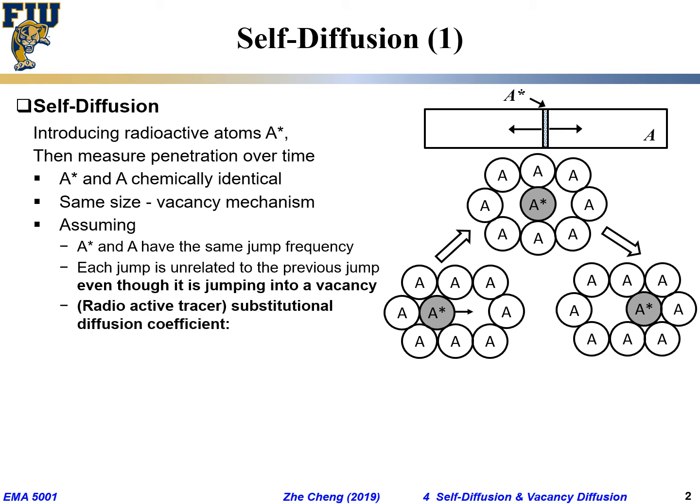Even though this is substitutional diffusion through the vacancy mechanism, we still assume the equation D = (1/6)γα² holds, where γ is the successful jumping frequency and α is the jumping distance. The jumping distance is clear — from one location to the next. But the γ, the successful jumping frequency term, needs some consideration.